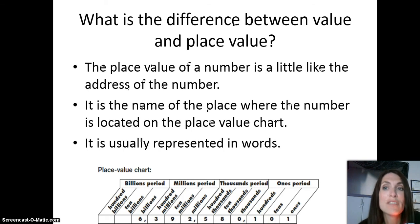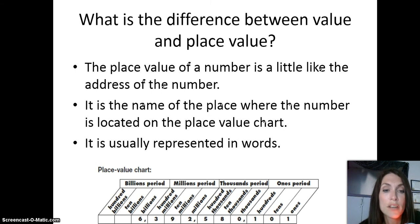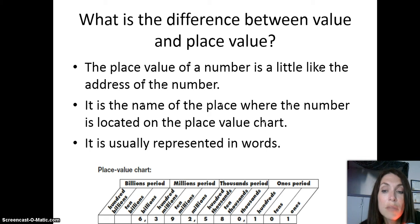So what is the difference between value and place value? The place value of a number is a little like the address of the number — it's the name of the place where the number is located on the place value chart, and it's usually represented in words. Please look at the place value chart at the bottom of the slide. You'll see that we have the number 6,392,580,101. Above each digit, you'll see the place value position. They're listed as 1s, 10s, 100s, 1,000s, 10,000s, 100,000s.